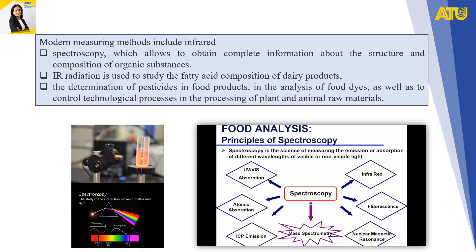Spectroscopy is the science of measuring the emission or absorption of different wavelengths of visible or non-visible light. Spectroscopic methods used in food analysis include infrared, fluorescence, nuclear magnetic resonance, ICP emission, atomic absorption, and UV-Vis absorption spectroscopy.